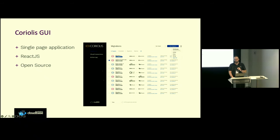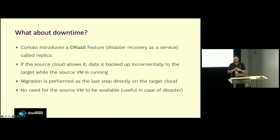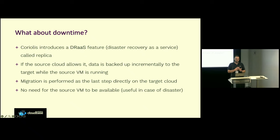There's something else we didn't discuss — this is the elephant in the room: what about downtime? When you migrate a VM from source cloud to destination cloud, you have to shut down the VM, transfer the disk, then start it again on the target. This is not acceptable for customers who would adopt migration strategies only as a disaster recovery solution. So Coriolis has a Replica feature — it's meant to be a disaster recovery as a service feature. We use the source cloud capabilities to take a snapshot of the VM while it's still running and copy data off that snapshot, so your data is synced to the target cloud but not yet started.